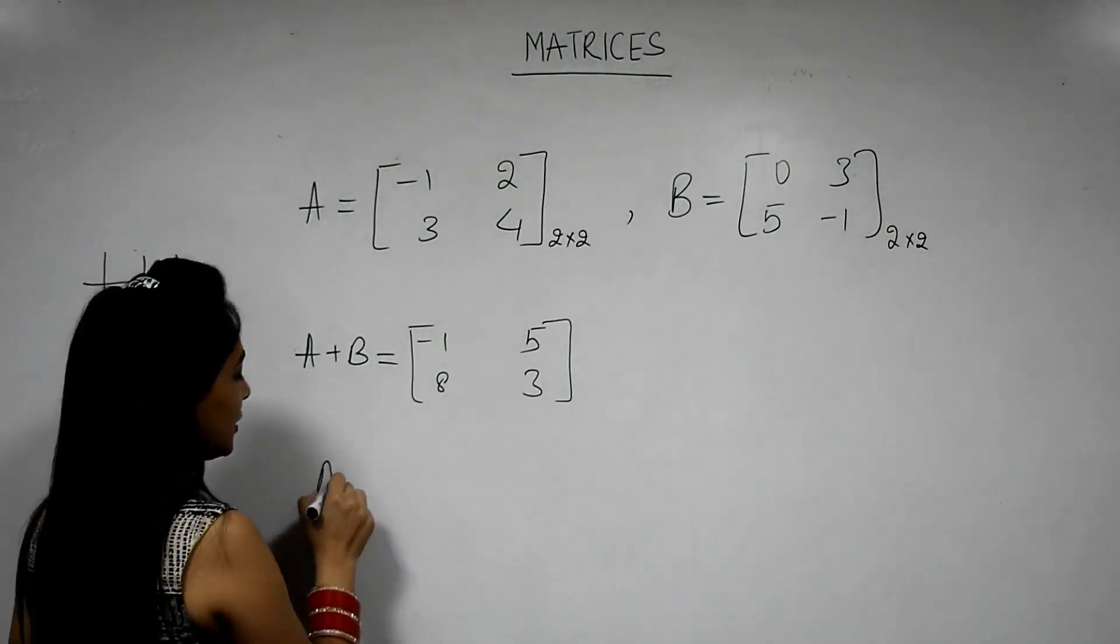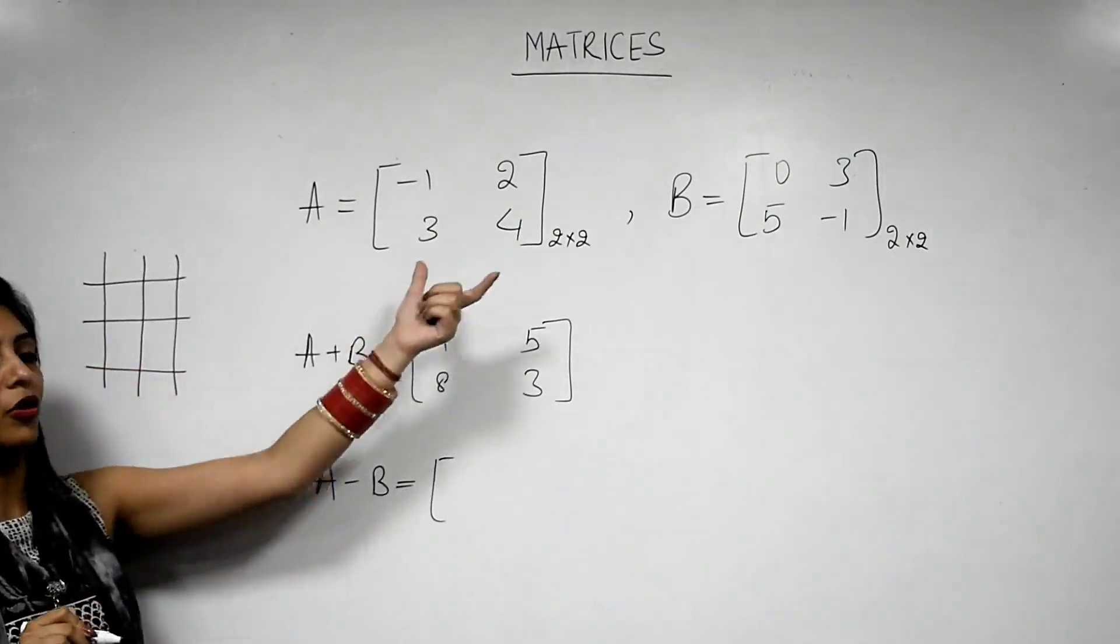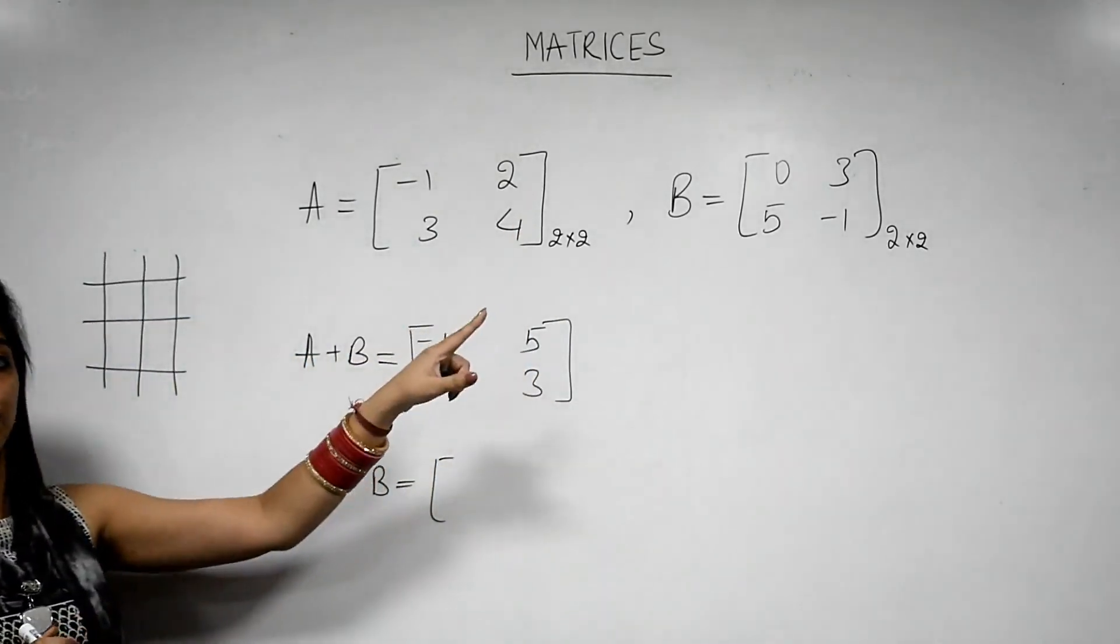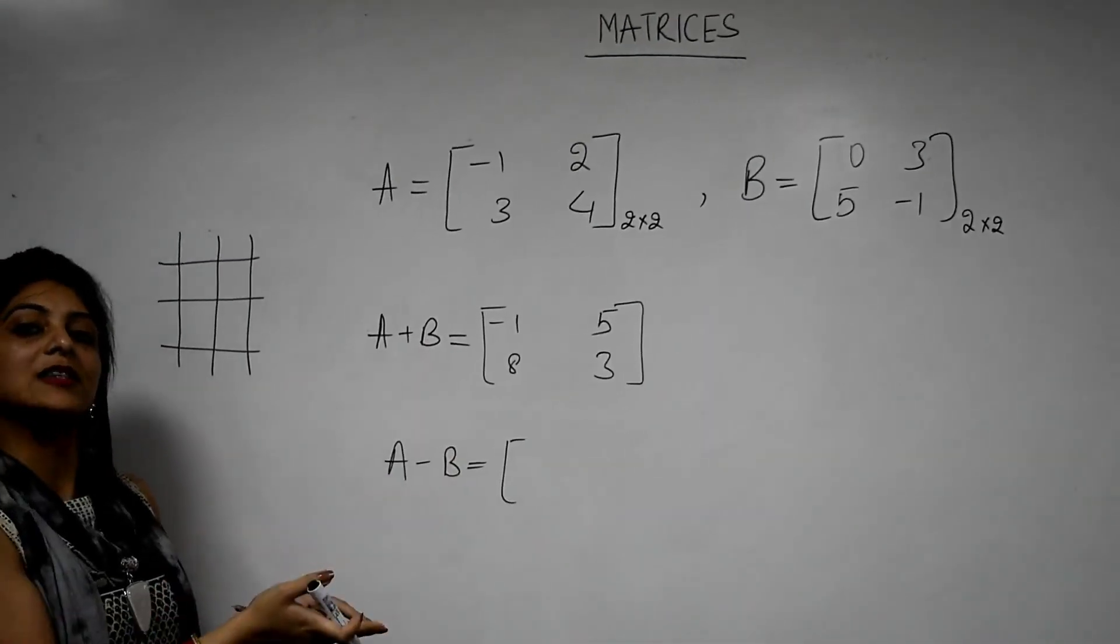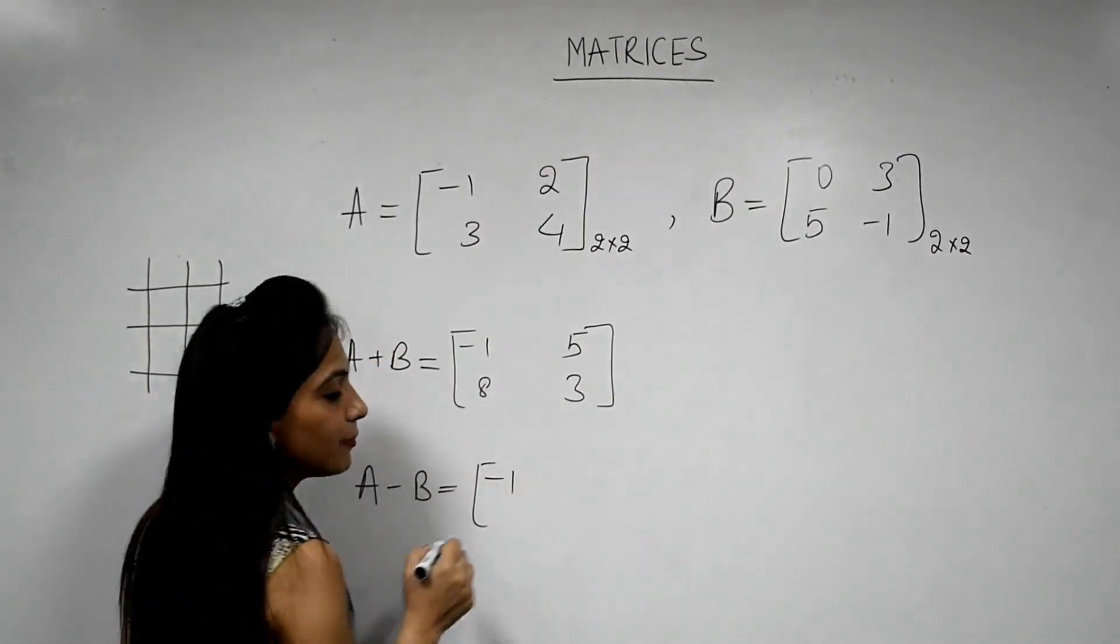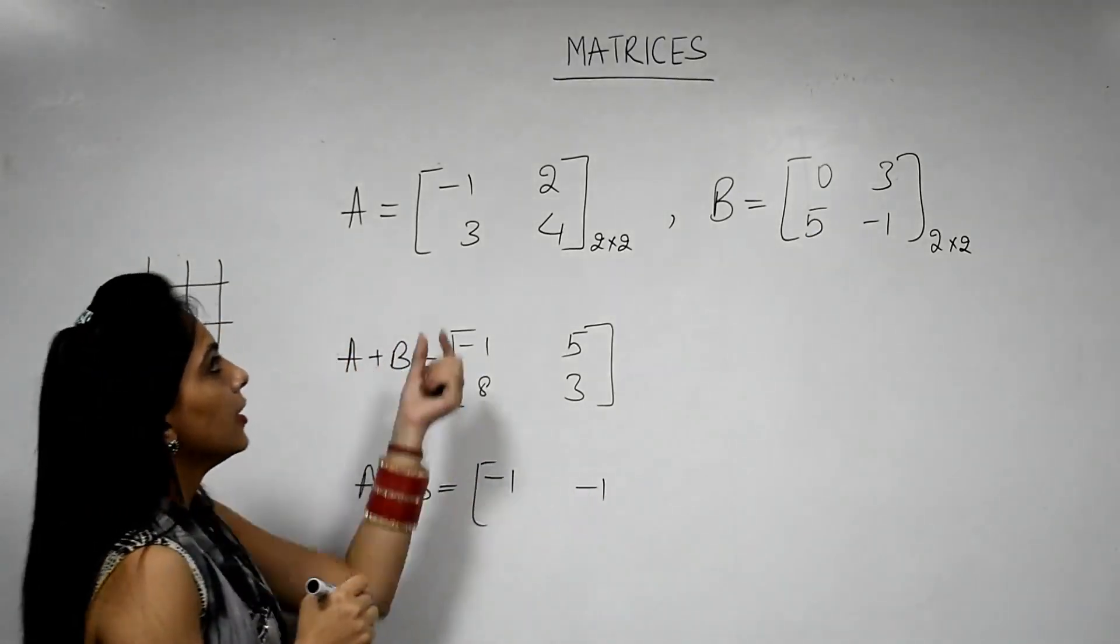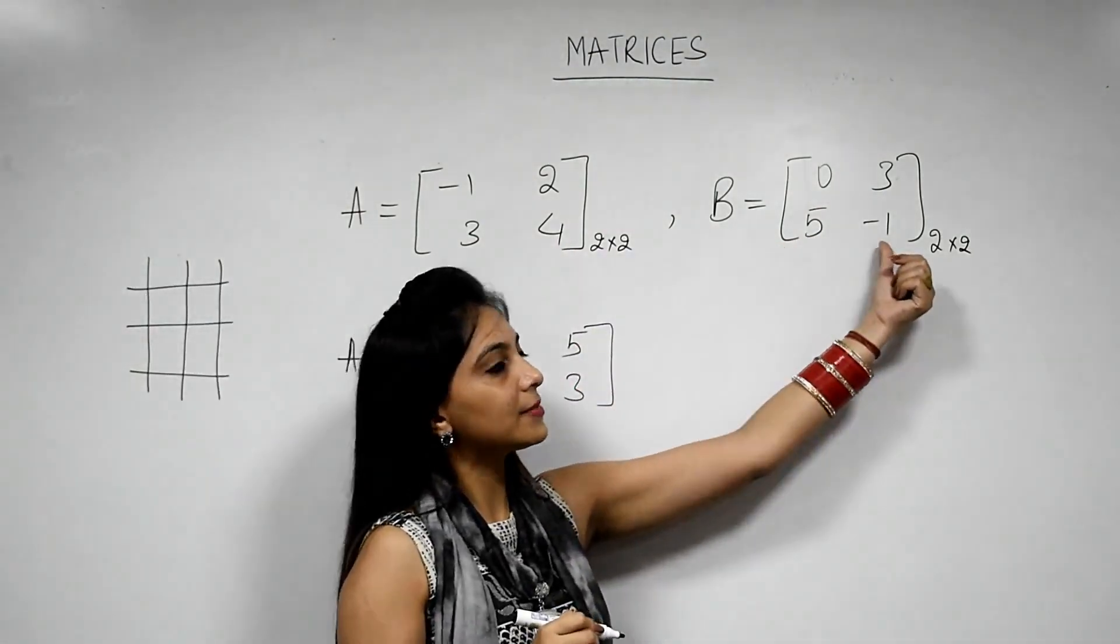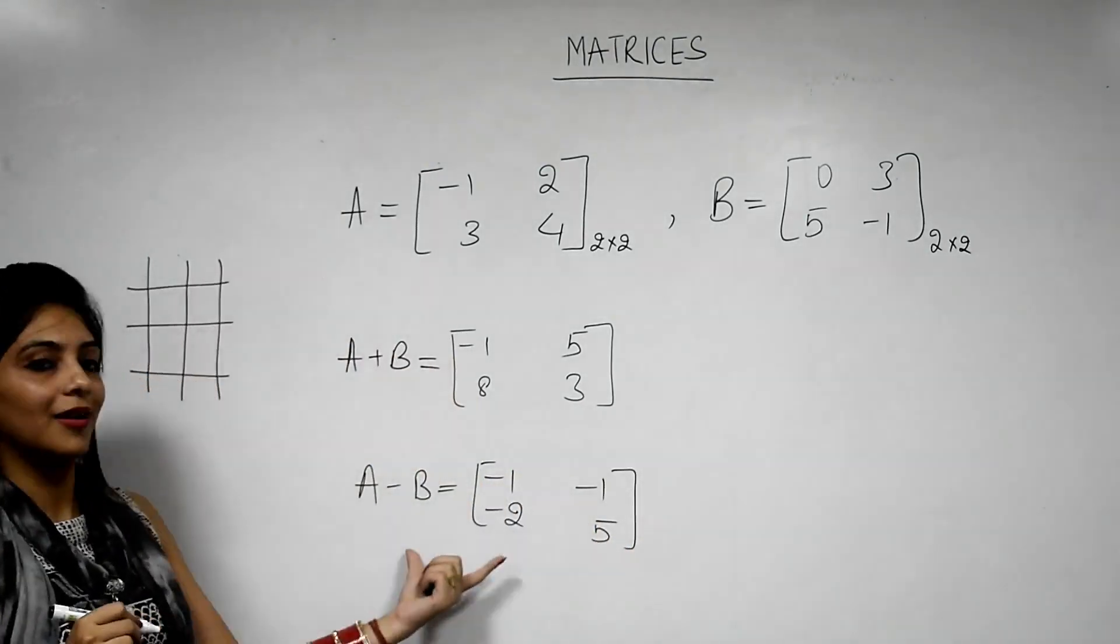Similarly, if we have to subtract two matrices, again first condition is same. That means order of the matrix should be same. Here also it is 2 by 2, here also it is 2 by 2. So we can subtract these two matrices. Now in the previous example we had to make an addition. Now we will subtract the corresponding elements. Means minus 1 minus 0 which is again minus 1, 2 minus 3 which is minus 1, 3 minus 5 which is minus 2, and 4 minus minus 1 which will give us 5. So this is our A minus B.